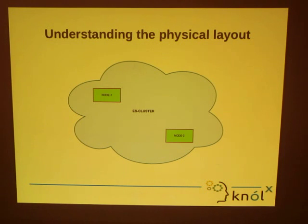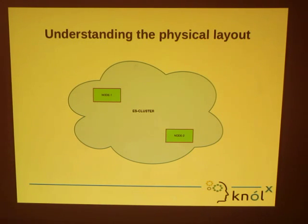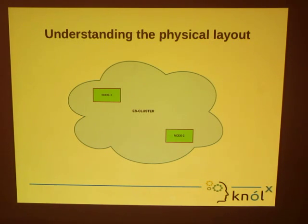Understanding the physical layout. A cluster is formed when two or more nodes have the same cluster name. Elasticsearch is configured to use multicast out of the box. In multicast, it sends a UDP across the network and all nodes with the same cluster name respond back, thus creating a cluster. This is not recommended for production use because unwanted nodes may also join your cluster. The recommended way is to use unicast, in which you can specify the IP address and port number of the nodes, so only those nodes would join the cluster and everyone else would be excluded.